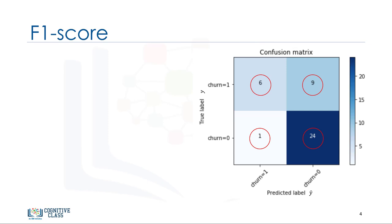In the specific case of a binary classifier, such as this example, we can interpret these numbers as the count of true positives, false positives, true negatives, and false negatives. Based on the count of each section, we can calculate the precision and recall of each label.